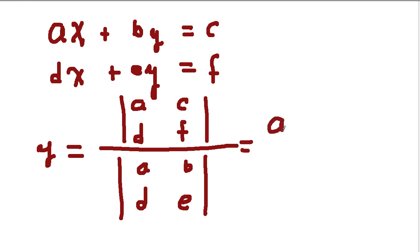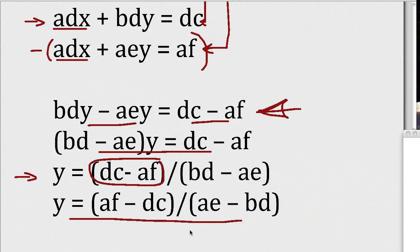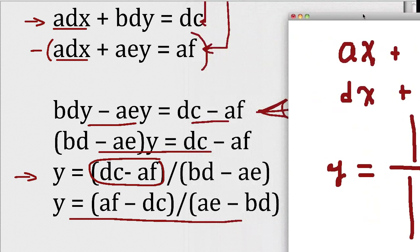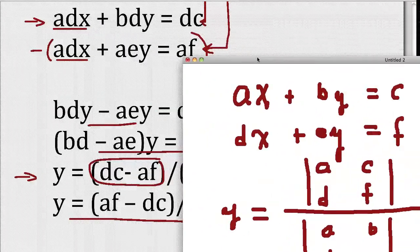The numerator becomes AF minus CD, and the denominator becomes AE minus BD. So here I have AF minus CD, and I go back, and I look at this expression right here, and what do I have? I have AF minus DC divided by AE minus BD, which is the same thing as AF minus DC, divided by AE minus BD.